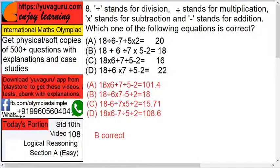So what we have done, we have already solved this. These are the correct ones in red. So it is 18 into 6 plus 7 divided by 5 minus 2, so that equals to 101.4. So is A correct? No.